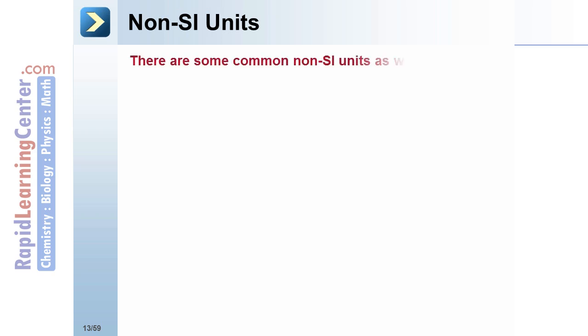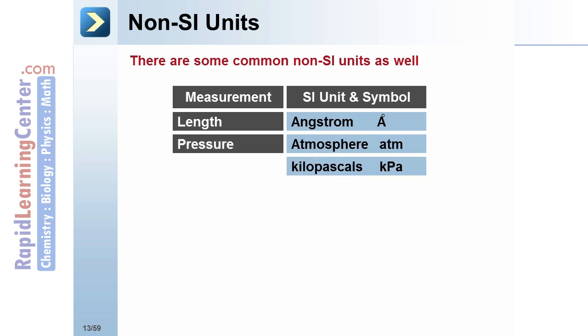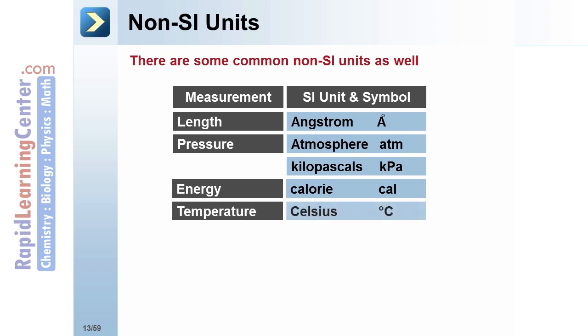Non-SI units: There are some typically used non-SI units in physics as well. For example, angstrom is a unit of length, atmospheres or kilopascals are units for pressure, calories are units of energy, and degrees Celsius are units for temperature.